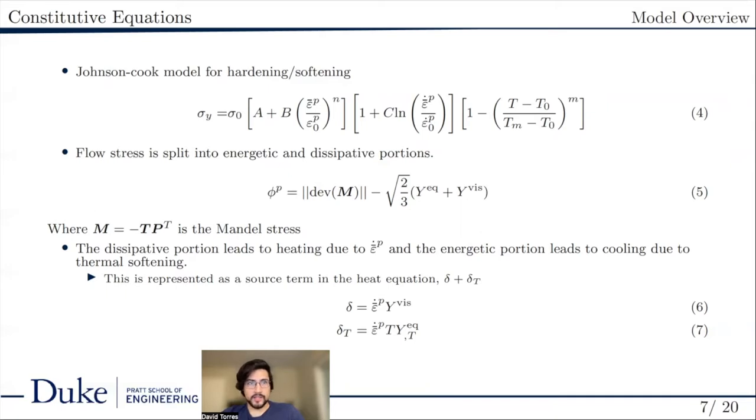The Johnson-Cook model hardens based on plastic strain and plastic strain rate. The influence of these terms are modified by the parameters b and c. Softening is temperature dependent and is modified by an exponent m as well as the melting and reference temperatures tm and t0.